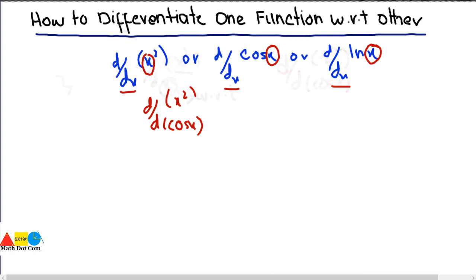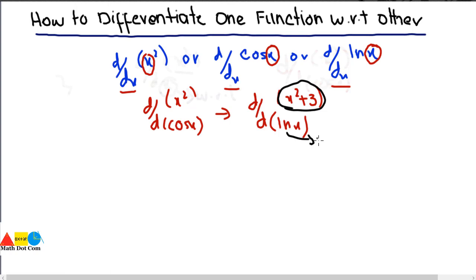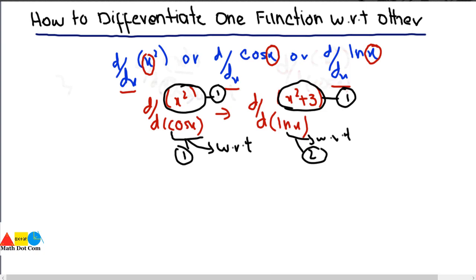Or if I say differentiate the function x² + 3 with respect to natural log of x. Here you have two functions: one function is what you are differentiating and the other is what you are differentiating with respect to. In previous cases there was only one function and the other was simply the variable involved in that function. So today we are going to learn how you can differentiate such functions.